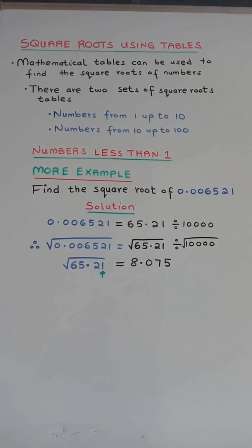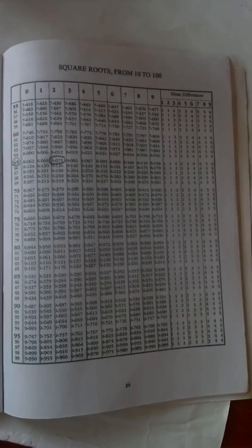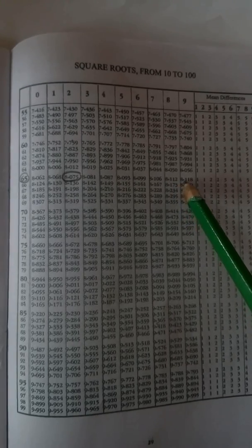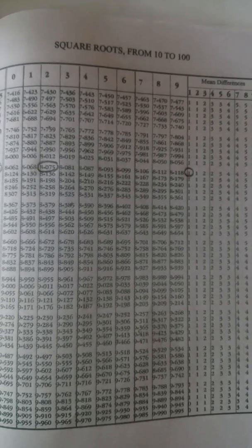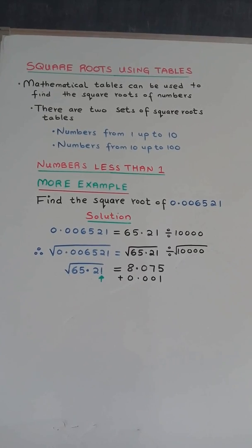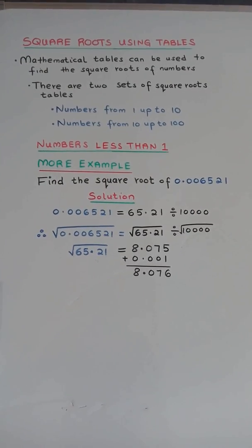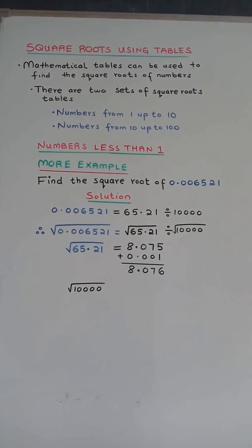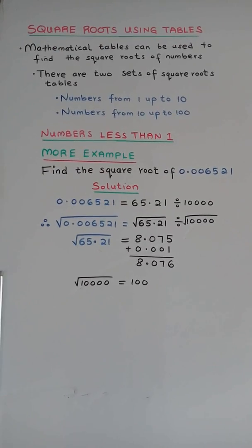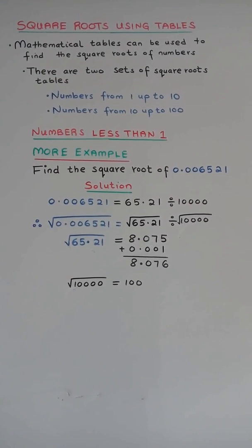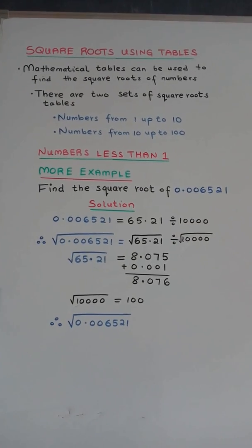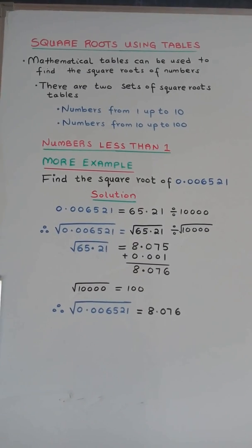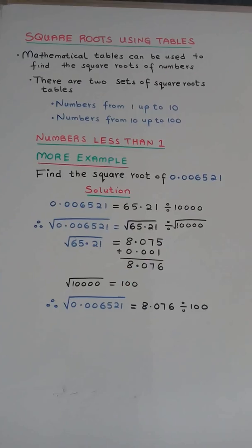The fourth digit is 1, found in the mean difference columns. The corresponding number is 1, so we add 0.001, giving 8.076. The square root of 10,000 is equal to 100. Therefore, the square root of 0.0106521 is equal to 8.076 divided by 100, which is 0.08076.